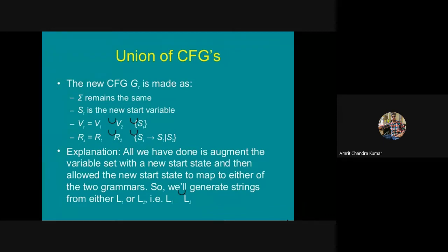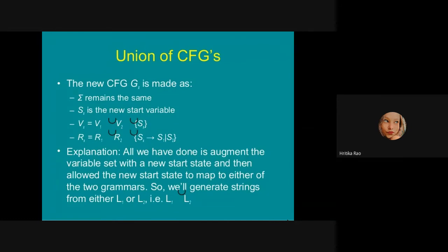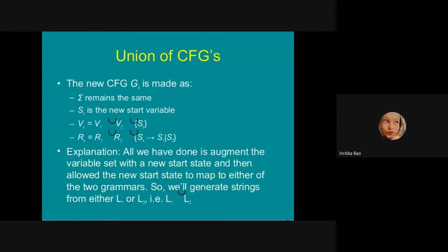The union of CFGs: the new CFG G_X is constructed so that sigma remains the same, S_X is the new start variable, and V_X equals V1 union V2 union {S_X}. R_X equals R1 union R2 union the rule S_X → S1 | S2. We have augmented the variable set with a new start state and allowed it to map to either grammar, generating strings from L1 union L2.